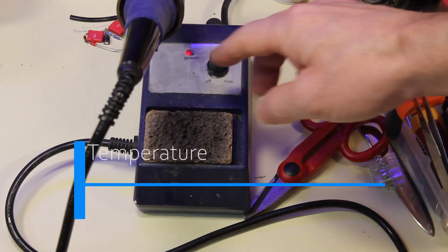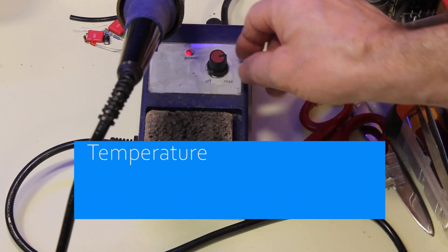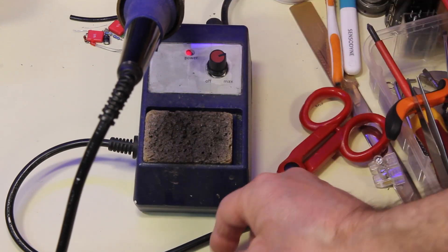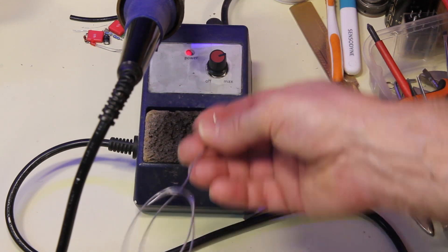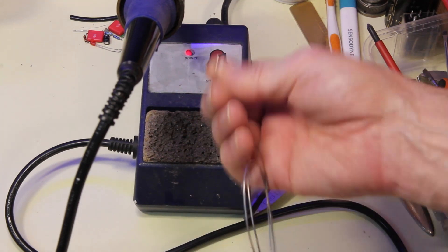A temperature-controlled iron is ideal, but even power-regulated iron is good enough to prevent burning the flux or having cold solder that doesn't wet well.